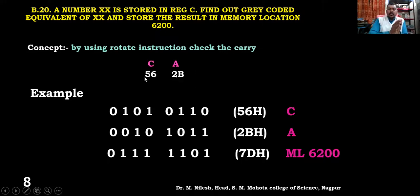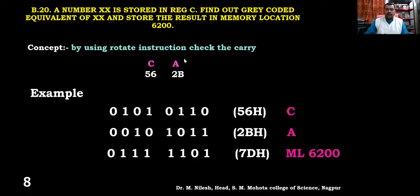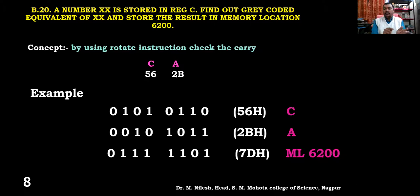Let us say we are having the content of C loaded as 56 hexadecimal — the number is 56H. We are loading it in register C. When we put this number, we have to copy it to the accumulator and then rotate it to the right. We are setting the carry so it should be zero. So 56 stands for 0101 0110 in binary. We are putting this in register C.